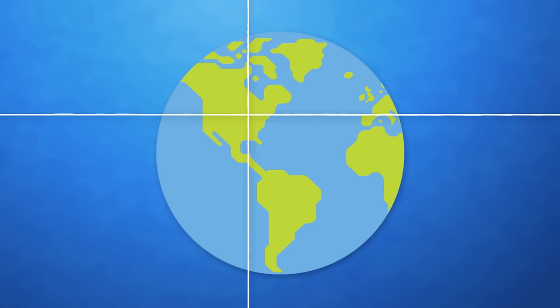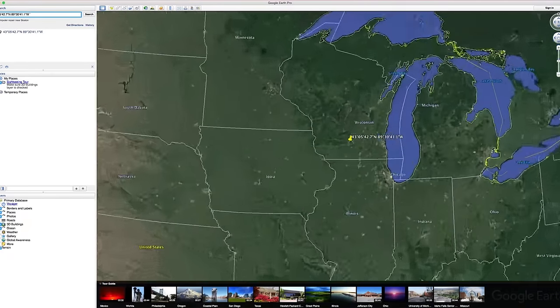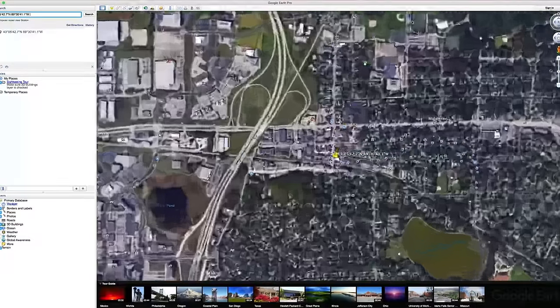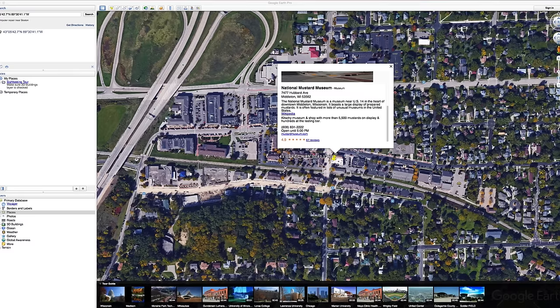But if we use a map or a digital tool like Google Earth, we can zoom in and see these coordinates lead us to the U.S. National Mustard Museum in Middleton, Wisconsin.